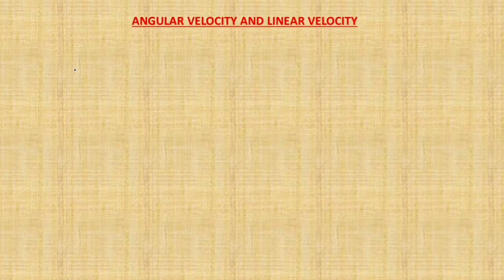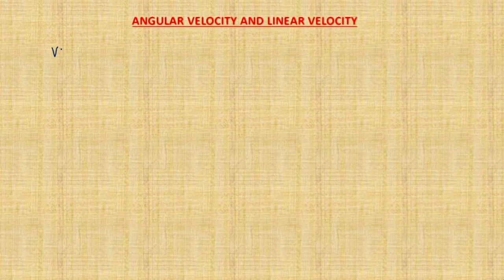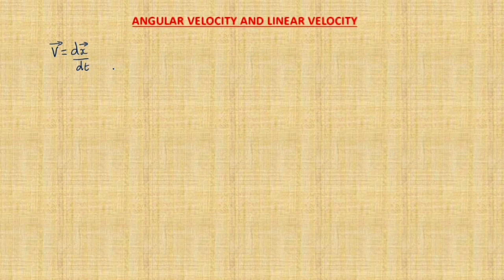Today in this lesson we are going to deal with angular velocity and linear velocity, and also we will be dealing with the relation between angular velocity and the linear velocity. So first of all, as we already learned, linear velocity v is equal to dx divided by dt, or in vector notation, velocity vector is equal to dx vector divided by dt. That means the rate of change of linear displacement is called the linear velocity.